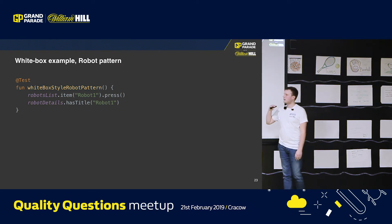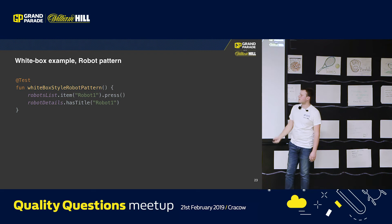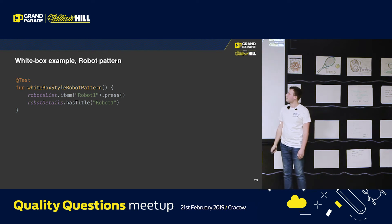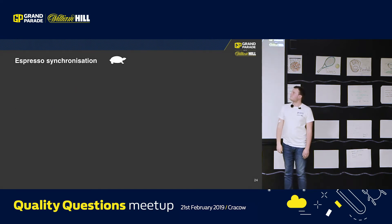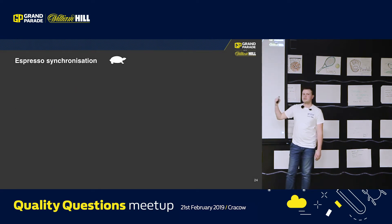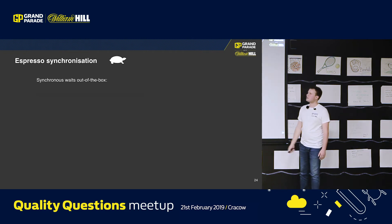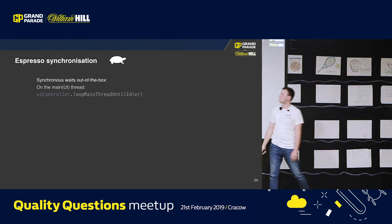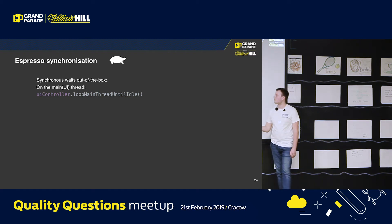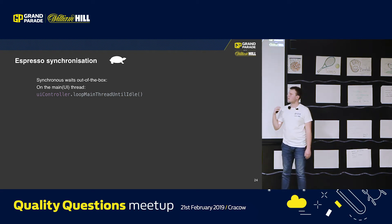Between those searches for elements and actions, Espresso has some synchronization. It has implemented out-of-the-box implicit waits, done on the main UI thread by those methods. It's used under every perform action and check assertion.